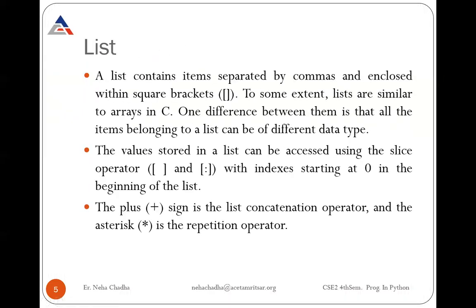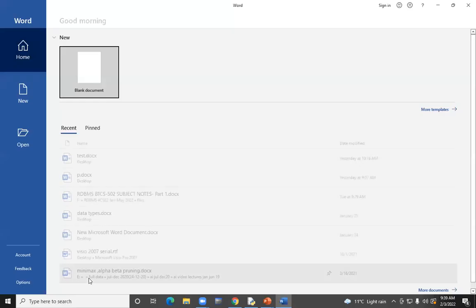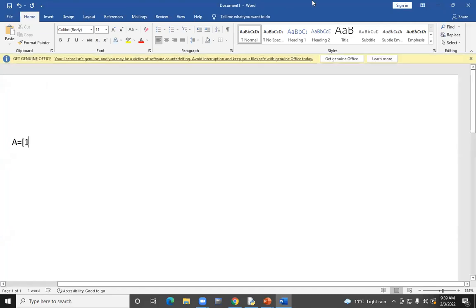Then is your list. A list contains items separated by commas and enclosed within square brackets. To some extent, lists are similar to arrays in C. You must be clear that the Python interpreter has been written in C, and some things have been taken from C. As you represent an array in C, I will show you.